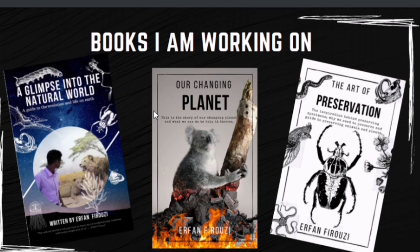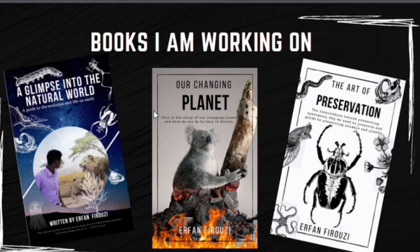At the end of summer, I will hopefully be working on three books. The first, 'Our Changing Planet,' is about how our world is changing — how climate change and plastic pollution are affecting animals and how animals affect us, told from the eye view of the animal. The second, 'The Art of Preservation,' is about how you can preserve animals — making sure they are already naturally dead so you won't harm them — covering how to preserve different species of animals and plants. The third, 'A Glimpse into the Natural World,' is a guide to the evolution of human beings and animals, from the start of life on Earth until today.